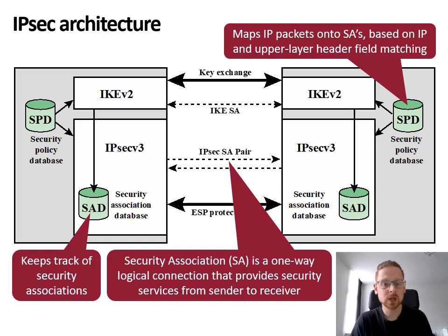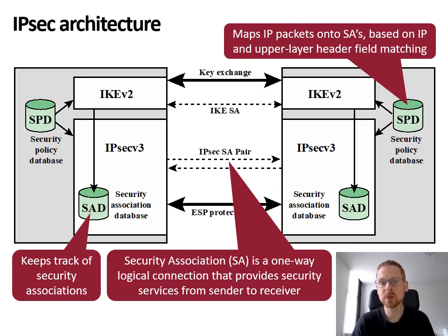The Security Association Database or SAD keeps track of all the security associations in the network. The SPD maps IP packets that are either transmitted or received onto security associations based on the IP header fields. The IKE or Internet Key Exchange is responsible for managing and exchanging security keys used in the authentication and confidentiality or encryption processes.